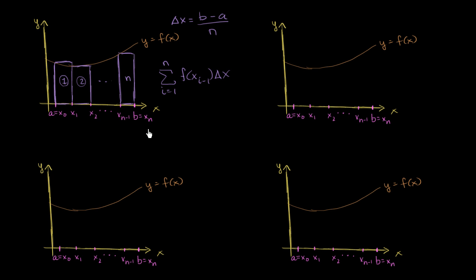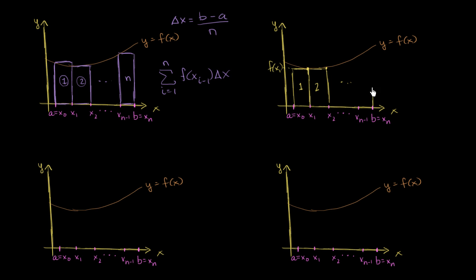This is not the only way to approximate the area using rectangles or some other geometric shape. For example, we could create rectangles where the height is defined by the rightmost boundary. So here's our first rectangle — its height is defined by the right boundary of the rectangle, so its height is f of x₁. For rectangle 2, we take the right boundary to define the height. Going all the way to the nth rectangle, we again use the right boundary to define its height.